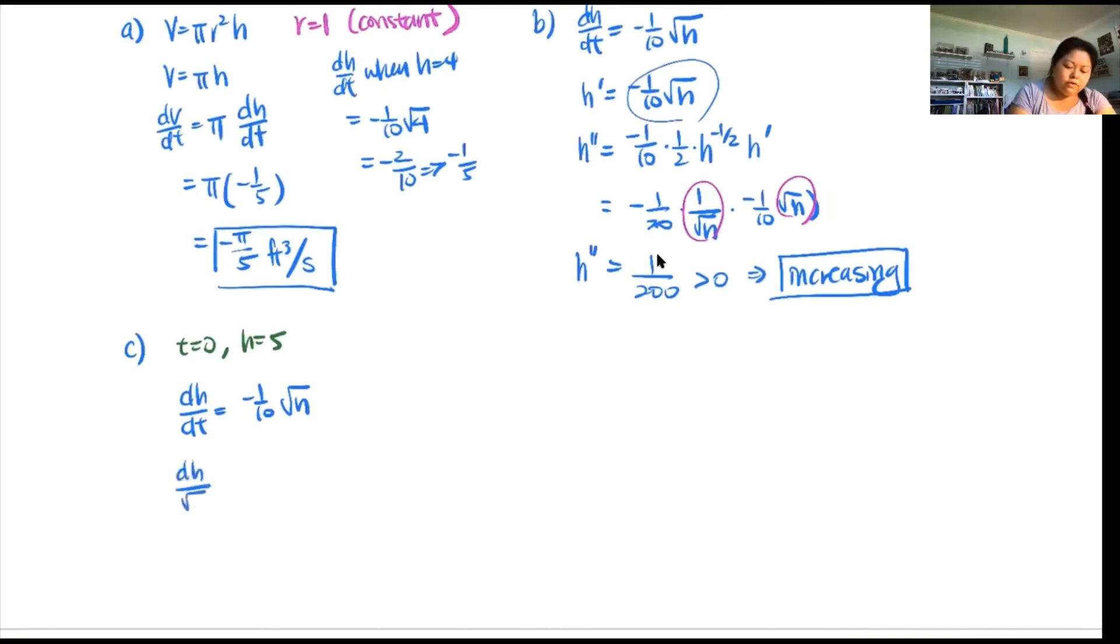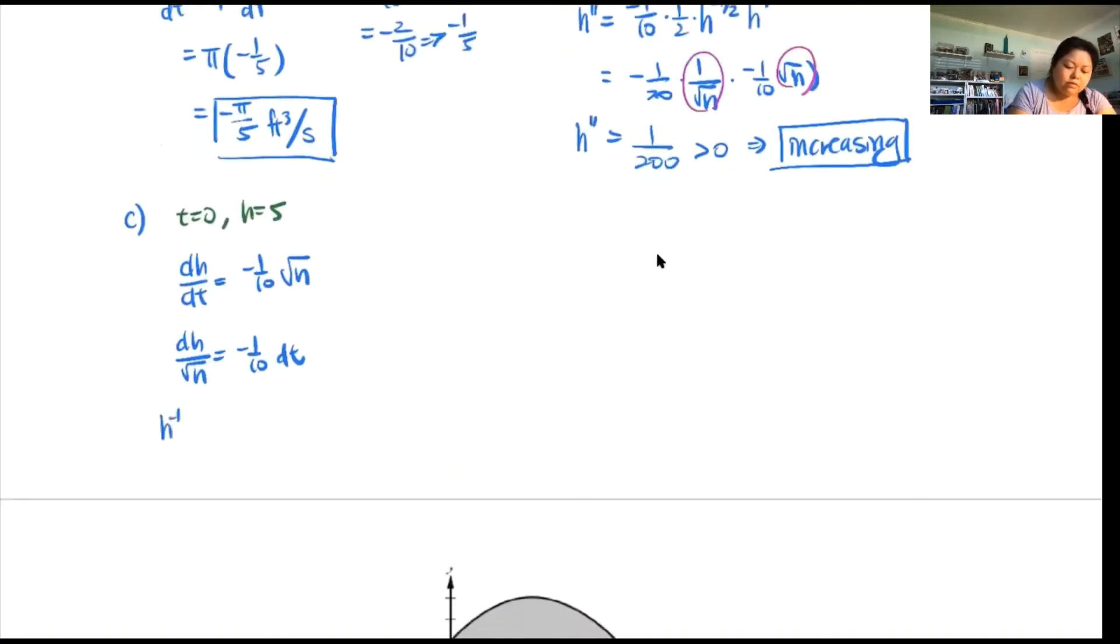You get dh over root h equals negative 1/10 dt. I strongly recommend rewriting this as h to the negative one half dh equals negative 1/10 dt. Now take the integral. You get h to the positive one half, don't forget to multiply by the reciprocal, equals negative 1/10 t plus C. This is where we plug in our initial value. 2 times root h, root 5, is equal to negative 1/10 times 0 plus C. That's really nice because 2 root 5 is equal to C.